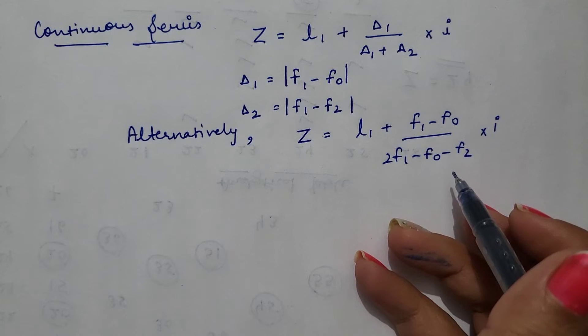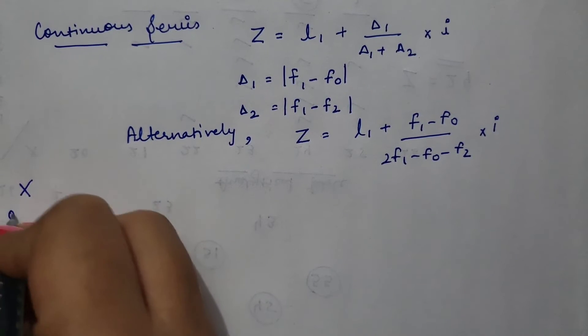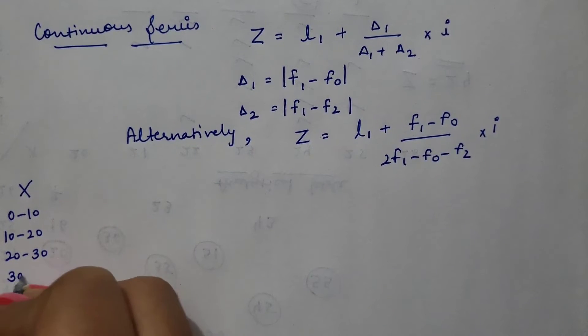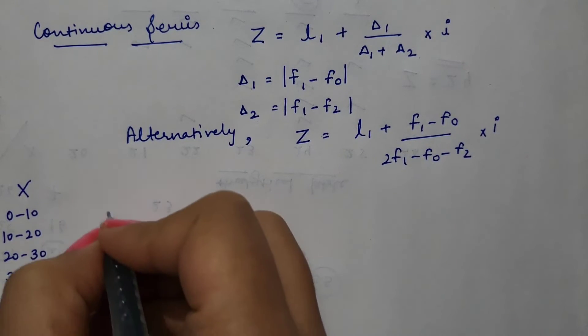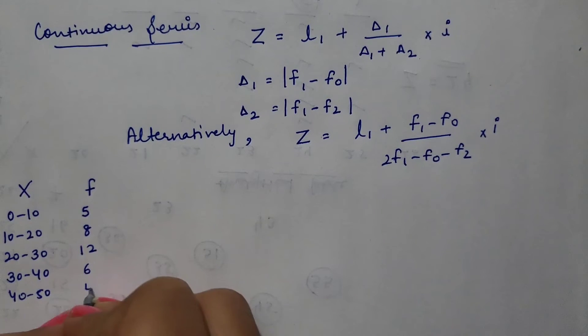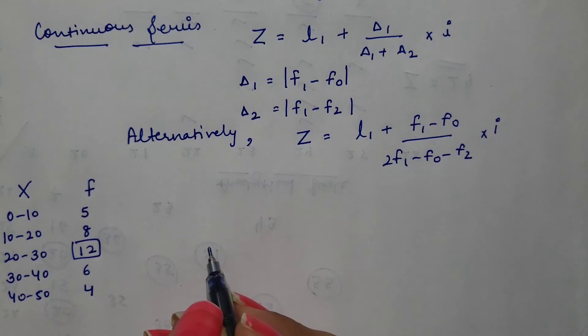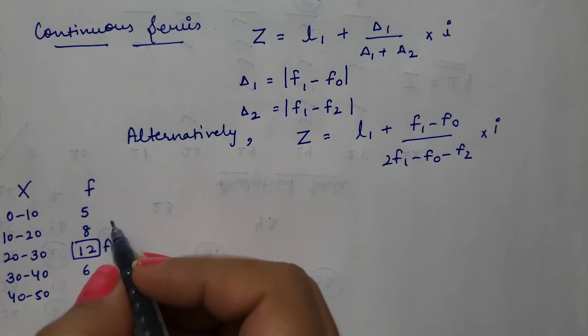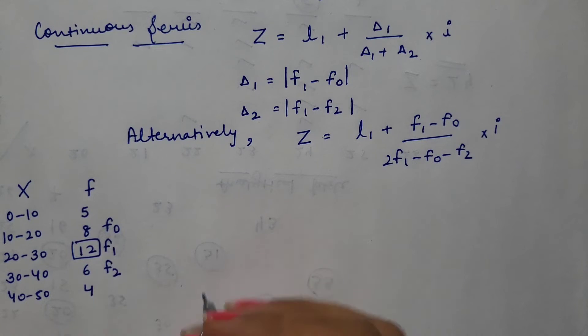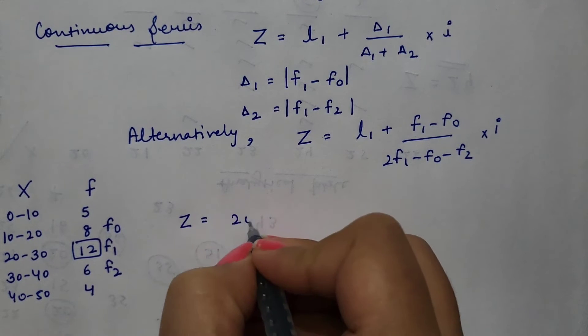Alternatively, we can write this formula like L1 plus F1 minus F0 divided by 2F1 minus F0 minus F2 multiplied by I. I will clarify everything with the help of example. Here I am taking a statement where observations are in interval of 10: 0-10, 10-20, 20-30, 30-40, and 40-50. Frequency is 5, 8, 12, 6, and 4. By observation, highest frequency is 12. This 12 would be F1, previous frequency would be F0, and next one would be F2. Model class is 20 to 30, so lower limit is 20.